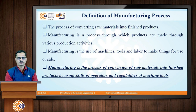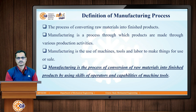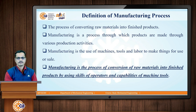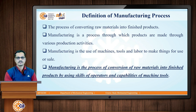Let us start with the definition of a manufacturing process. Whenever we say process, there will be input, and whenever we give input to a process we can expect output from the process. Similarly, in manufacturing we give input in the form of raw materials, and then various processes are performed on those raw materials in order to convert them into semi-finished or finished products.